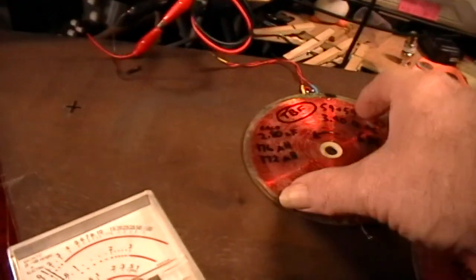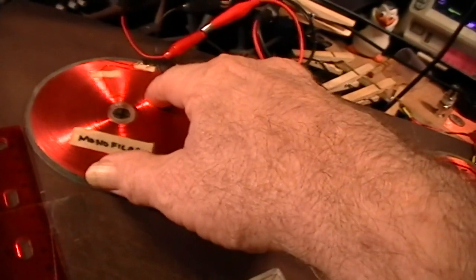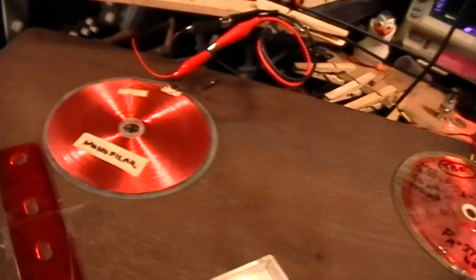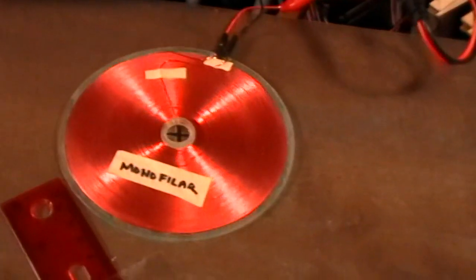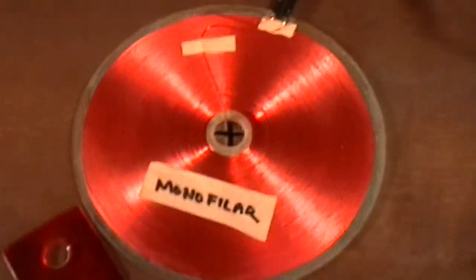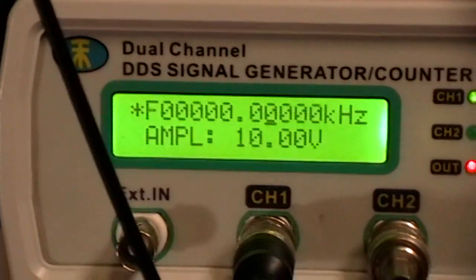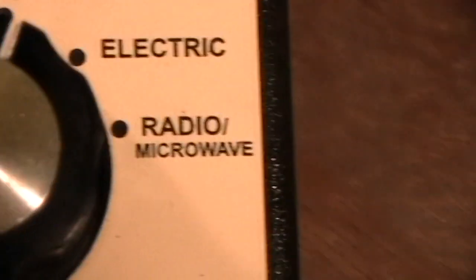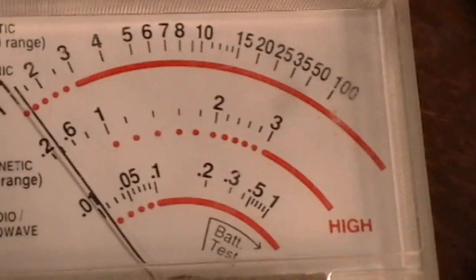Now I'm going to hook up the monofilar coil. I'll place it on the reference mark and then I will connect it. Now I've got the monofilar coil connected to the function generator. Right now it's not producing any output, frequency is zero. I've got the tri-field meter set to the zero to three milligauss range. That's going to be the middle range there that goes up to the three there.